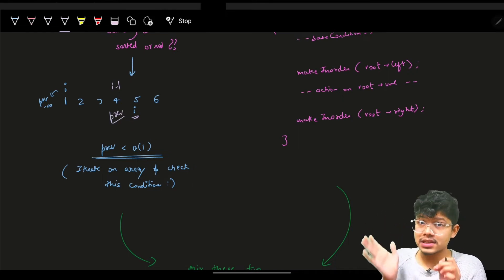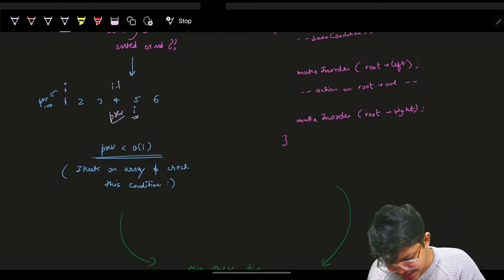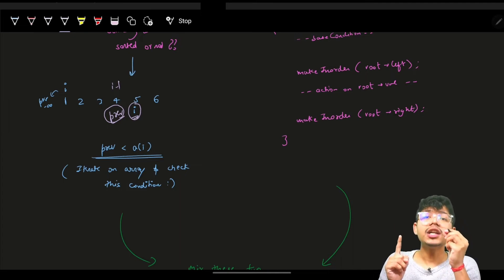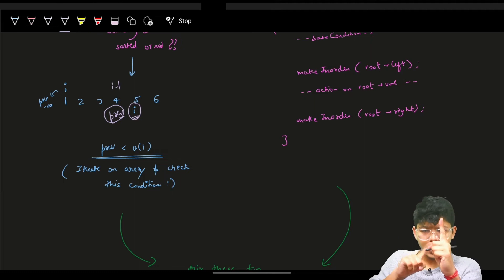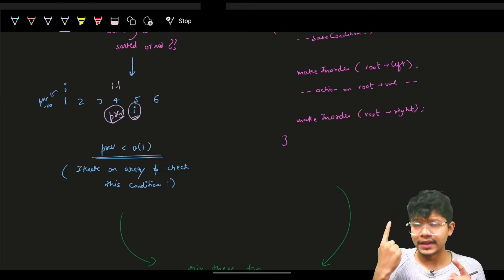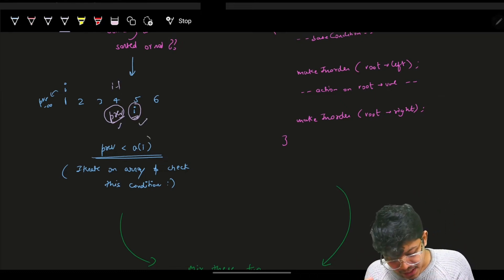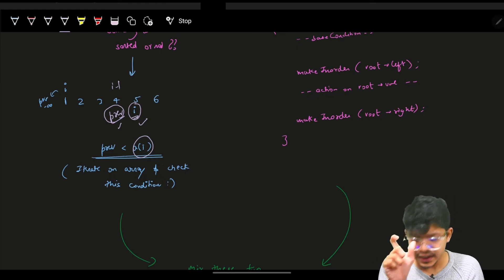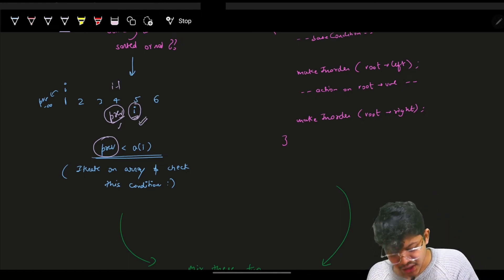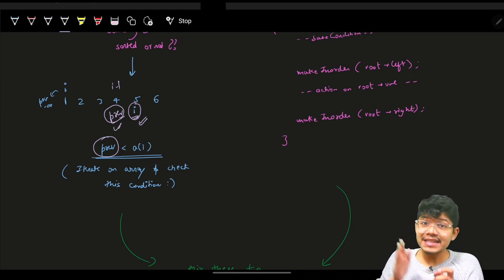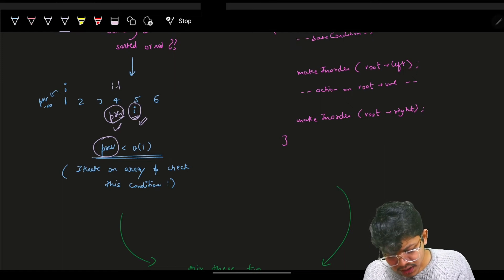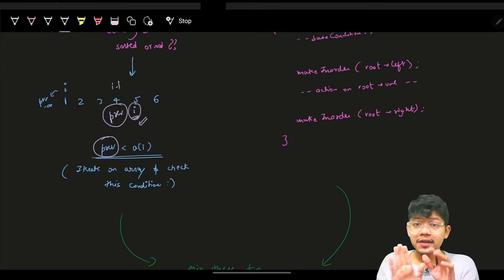Instead of using a vector, we use a 'previous' pointer. As we perform the in-order traversal, at each current node we compare it with the previous node. Each node at position i should be greater than the previous node. If this holds for every node, it's a valid BST.